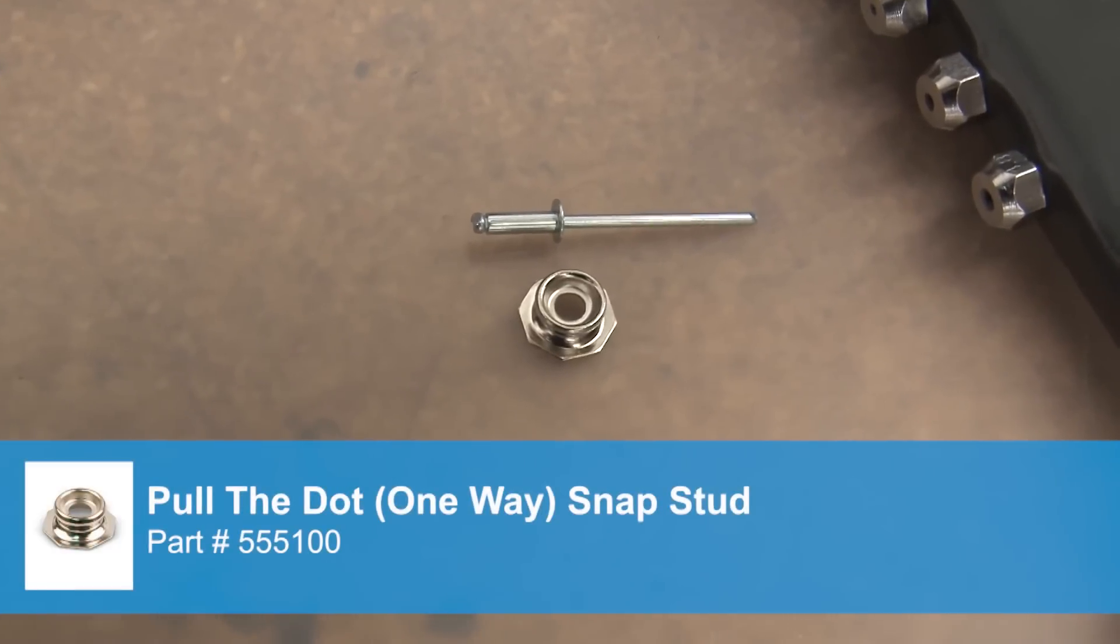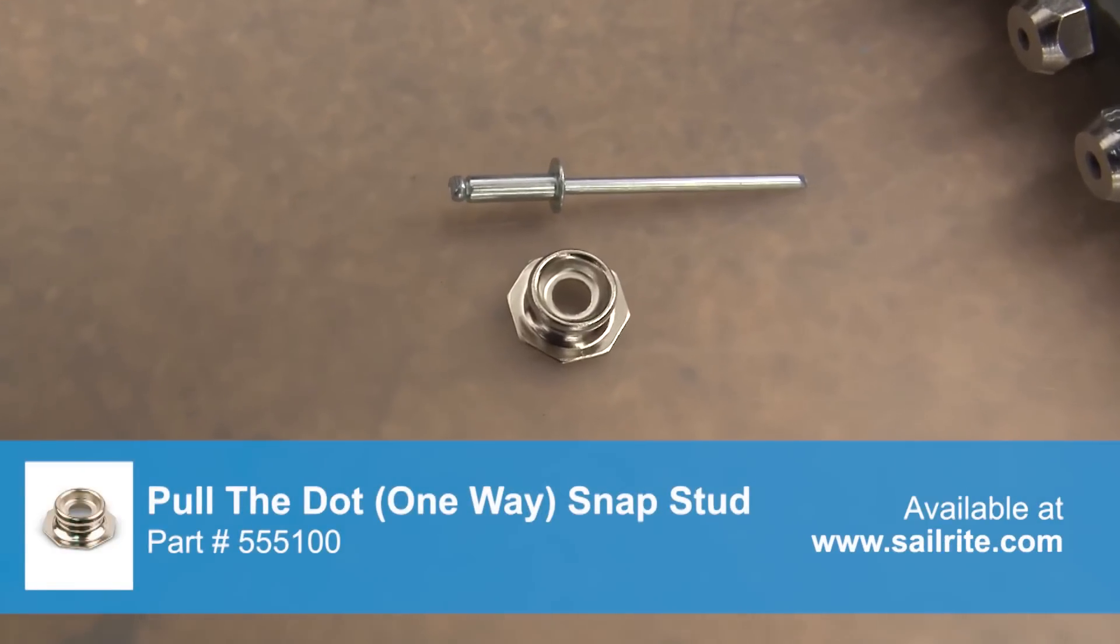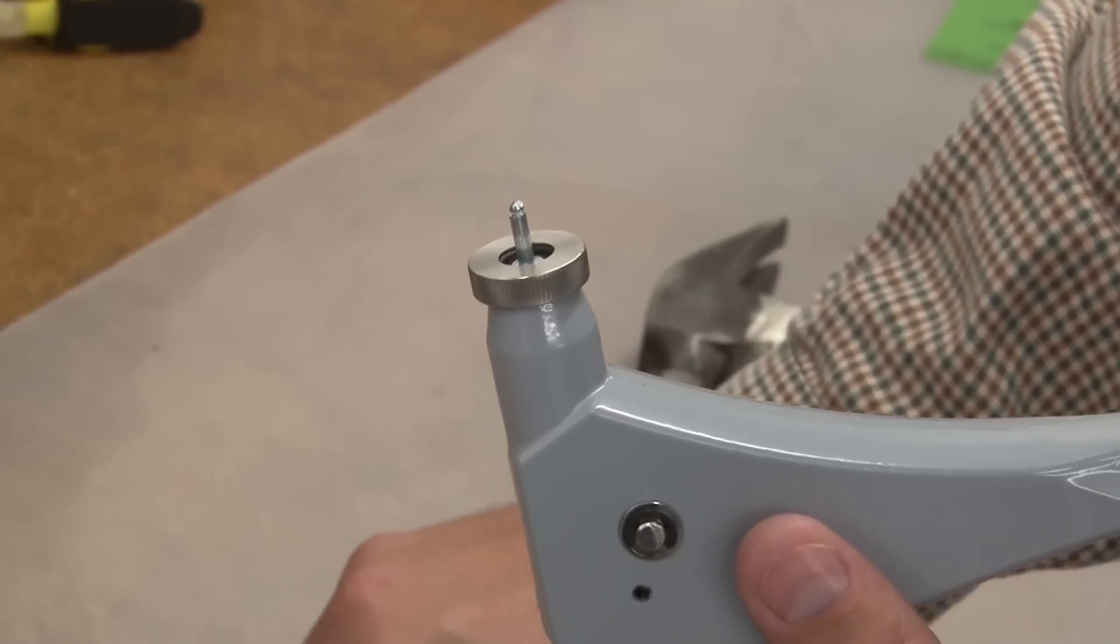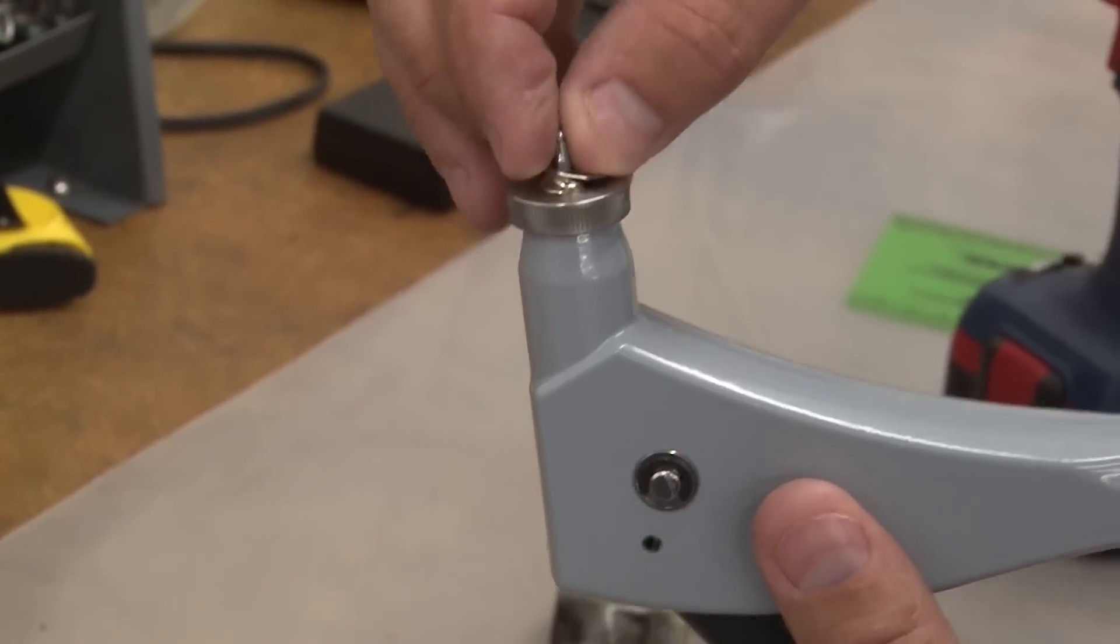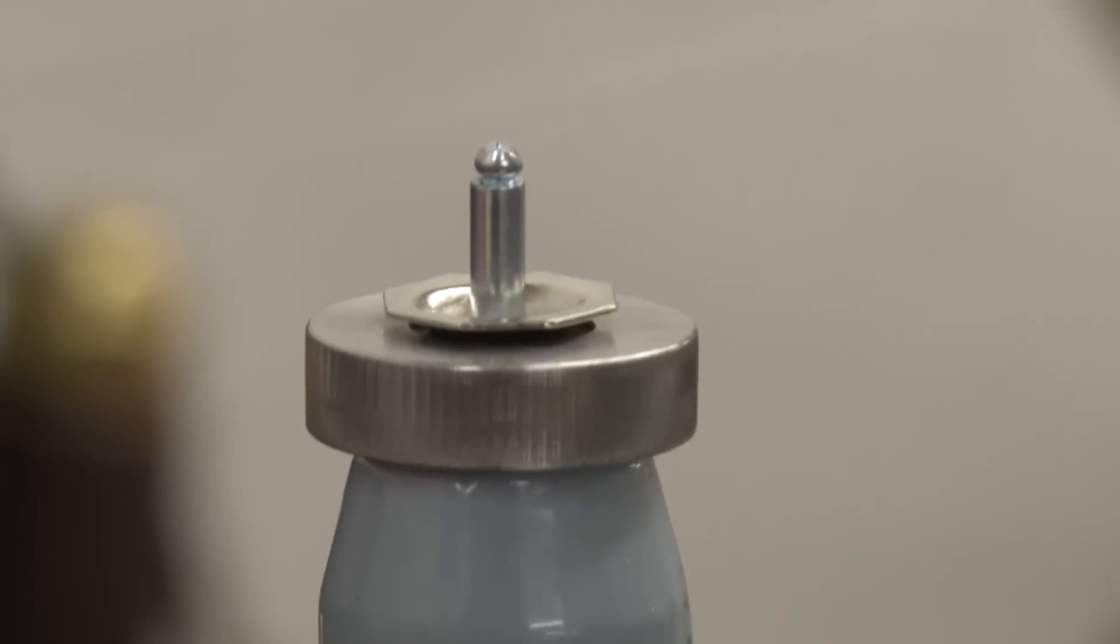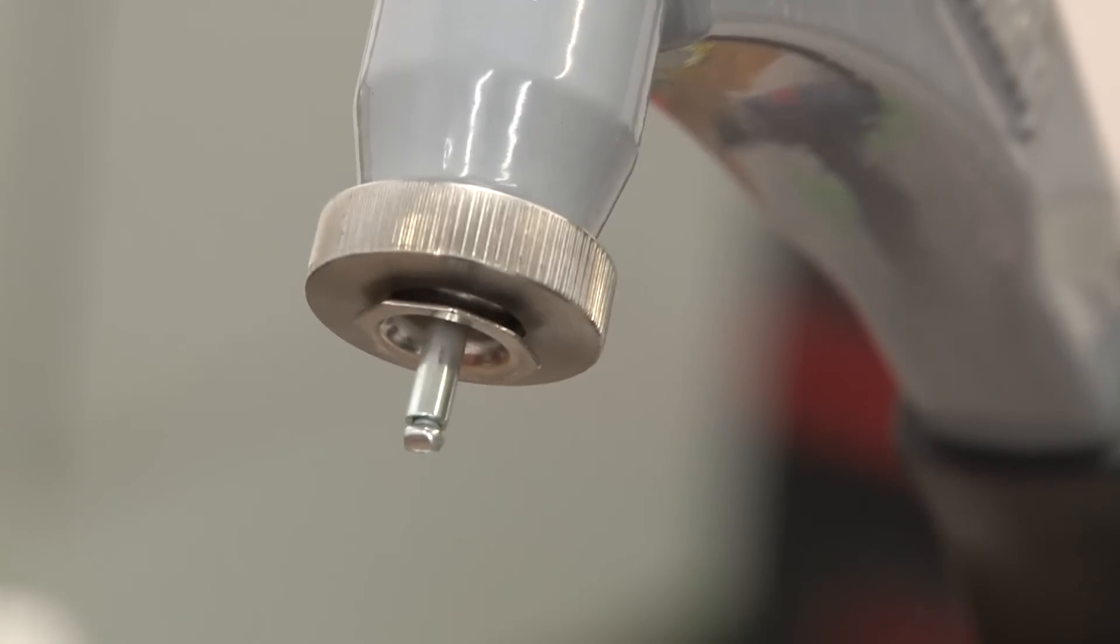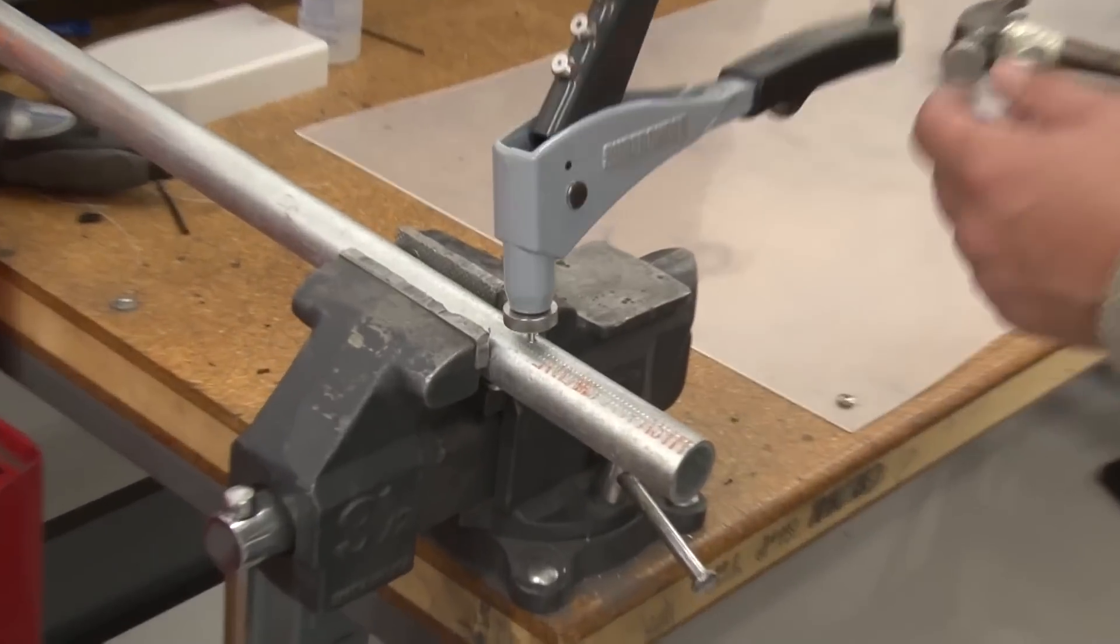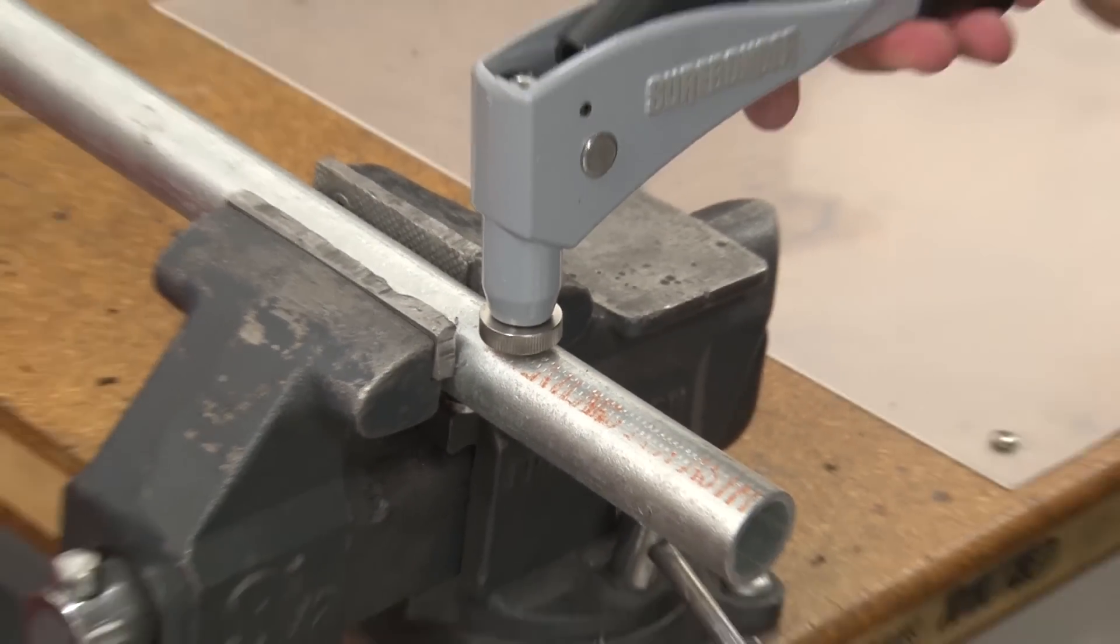Not only can you use the Snap-Rite Surface Mount stud die with standard snaps, you can also use it with the Pull-The-Dot One-Way Snap. The Pull-The-Dot Snap Fastener is a special locking snap that will only open on one side of the snap. The other three sides of the snap are locked. The Pull-The-Dot One-Way Snap is designed a little bit differently than a standard snap, but it still works great in this die.